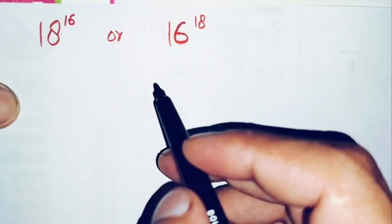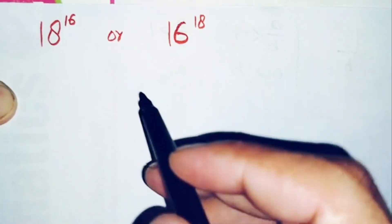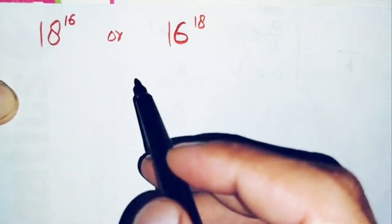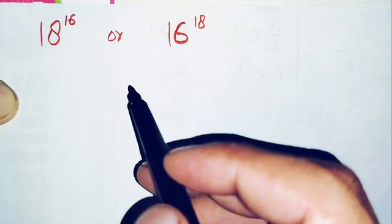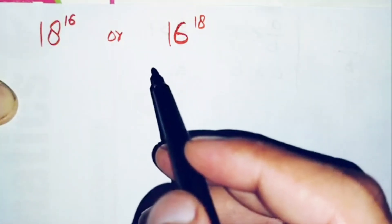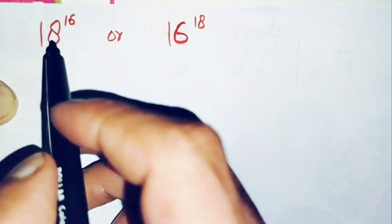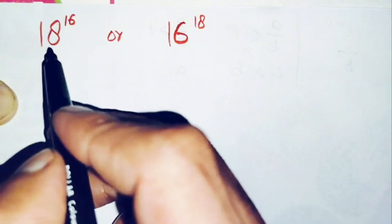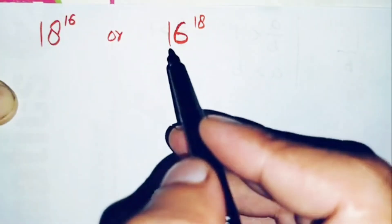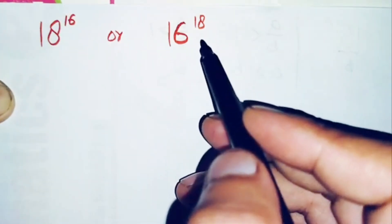Hello everyone, you are welcome to Math Explorer. In this video I'm going to solve this nice comparing math problem: which one of these numbers is greater and which one is smaller. The first number is 18 raised to power 16 and the second number is 16 raised to power 18.